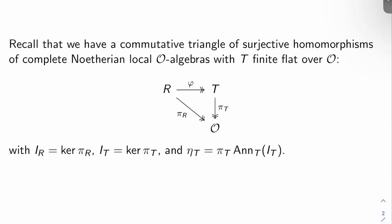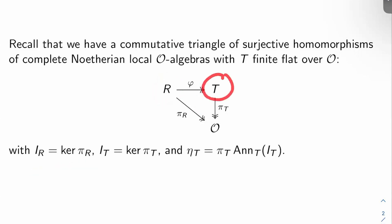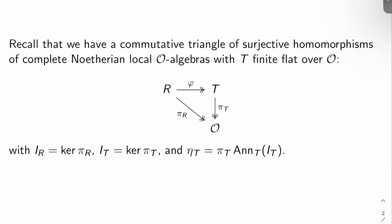We'll call I sub R the kernel of pi sub R in R. I sub T will likewise be the kernel of pi sub T. And then eta sub T — the congruence ideal — will be the image of the T-annihilator of this kernel I sub T in O under pi sub T.